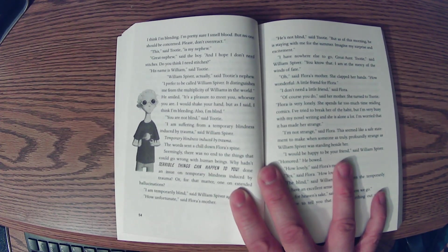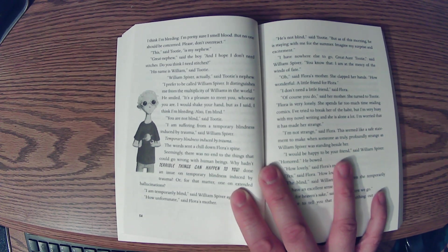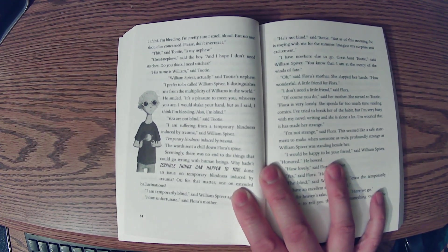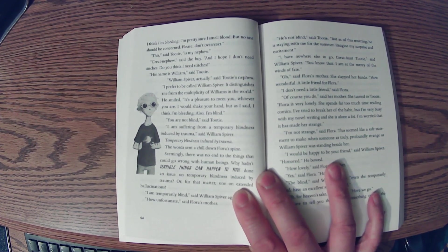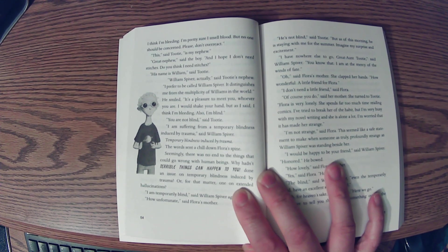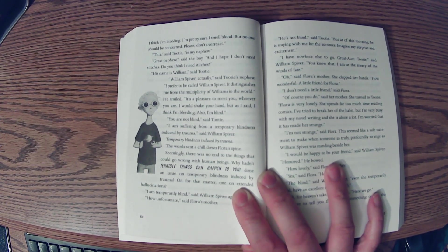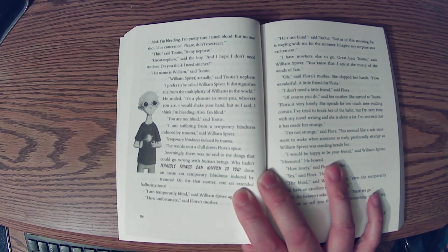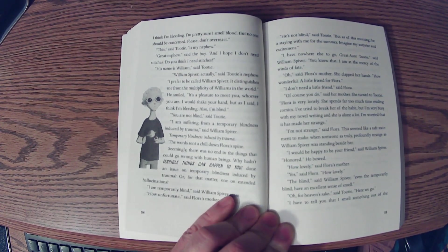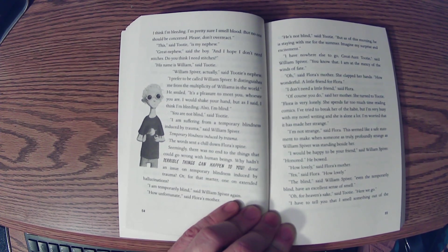This, said Tootie, is my nephew. Great nephew, said the boy. And I hope I don't need stitches. Do you think I need stitches? His name is William, said Tootie. William Spiver, actually, said Tootie's nephew. I prefer to be called William Spiver. It distinguishes me from the multiplicity of Williams in the world. He smiled. It's a pleasure to meet you, whoever you are. I would shake your hand. But as I said, I think I'm bleeding. Also, I'm blind. You're not blind, said Tootie. I'm suffering from a temporary blindness induced by trauma, said William Spiver. Temporary blindness induced by trauma. The words sent a chill down Flora's spine. Seemingly, there was no end to the things that could go wrong with human beings. Why hadn't Terrible Things Can Happen to You done an issue on temporary blindness induced by trauma, or for that matter, one on extended hallucinations?